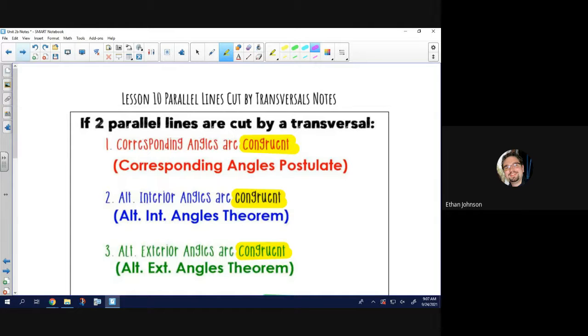So first, corresponding angles, or the angles that match each other in location, are congruent, meaning their values are equal. Alternate interior angles are congruent. Alternate exterior angles are congruent.